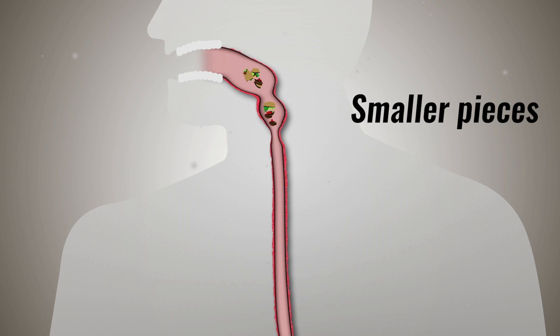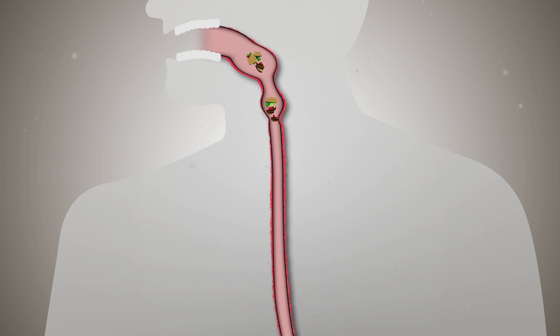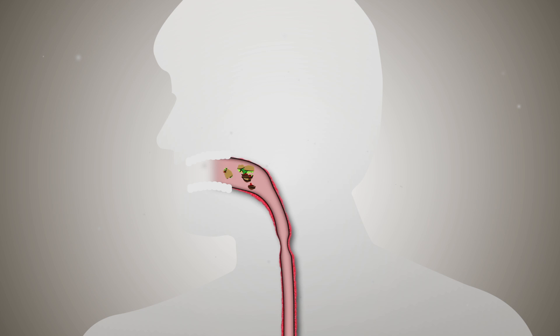Chewing food breaks it down into smaller pieces, whilst saliva lubricates food, assisting in the act of swallowing. It is in the mouth where the digestive enzyme amylase is released, which initiates the digestion of carbohydrates.